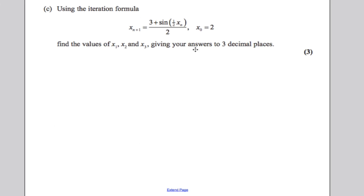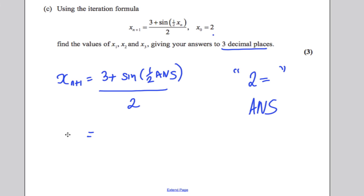So part C, use the iteration formula to find x1, x2, and x3. On your calculator, type 2 equals. Then it is stored in the ans function. And on your calculator, then you would type in 3 plus sine of a half ans over 2. You would simply type that in your calculator with your calculator in radians mode, don't forget. So 3 plus sine of a half times ans over 2. So typing that in your calculator, you would get x1 is equal to 1.921 to 3 decimal places.